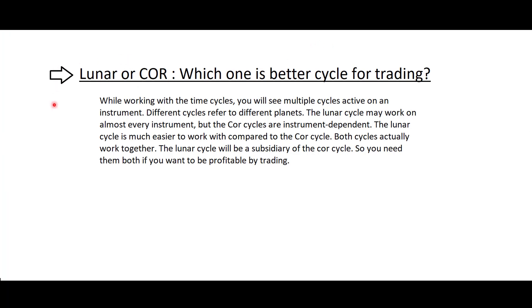Now let's move forward to the next question: LUNAR or COR — which one is the better cycle for trading? While working with the time cycles you will see multiple cycles active on an instrument. Different cycles refer to different planets. The LUNAR cycle may work on almost every instrument, but the COR cycles are instrument dependent. The LUNAR cycle is much easier to work with compared to the COR cycle, and both cycles actually work together. The LUNAR cycle will be a subsidiary of the COR cycle, so you need them both if you want to be profitable by trading.